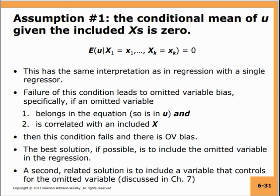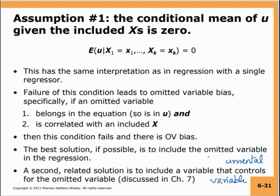The best solution, if possible, is to include the omitted variables in the regression. If data is not available on all omitted variables, you might include a different variable that controls for the omitted variable. This is known as an instrumental variable. We are not going to introduce this concept in this course, but you should know that instrumental variables can address omitted variable bias when you don't have all the necessary variables.